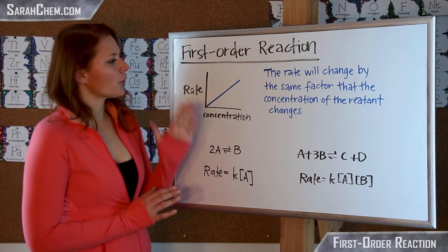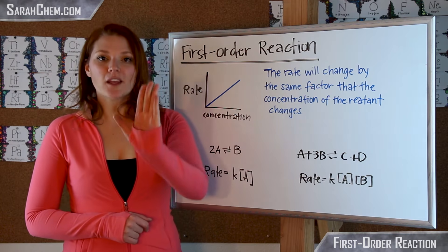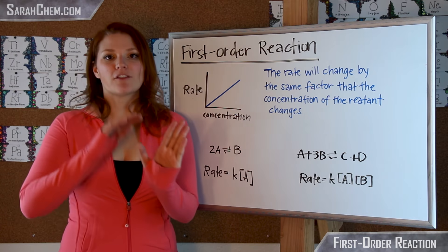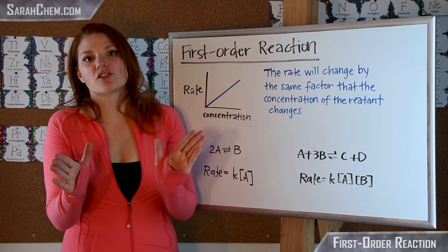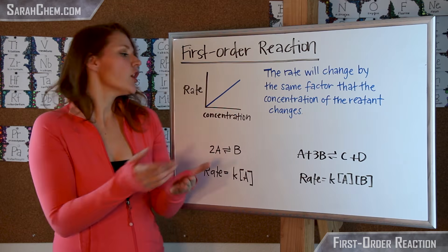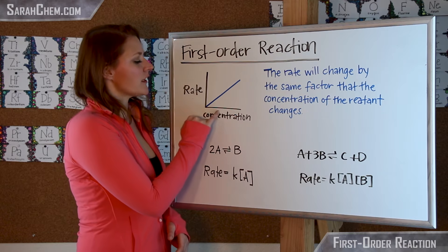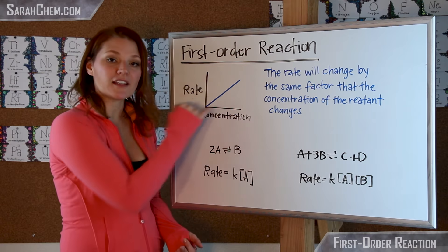When we say first order, what that means is that the rate will essentially change by whatever factor I change the concentration of a specific reactant by. So meaning if I were to take the concentration and double it, then I would find that my rate is also doubled.